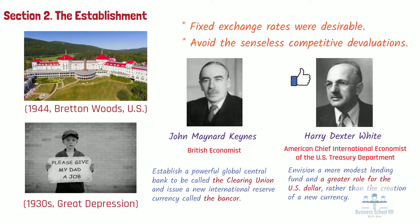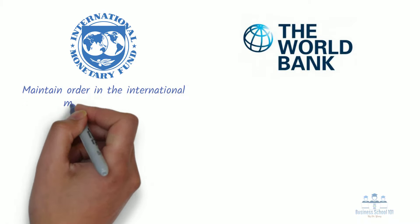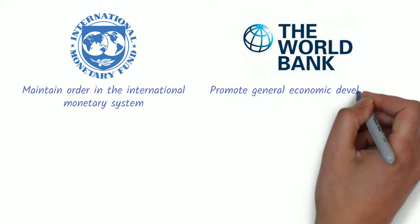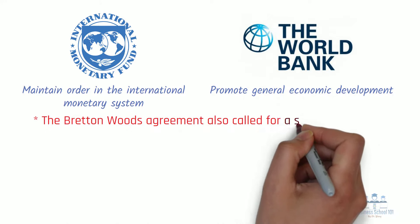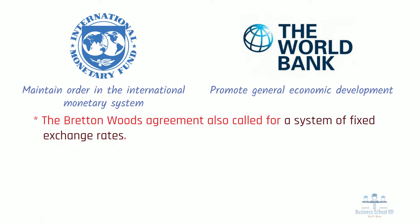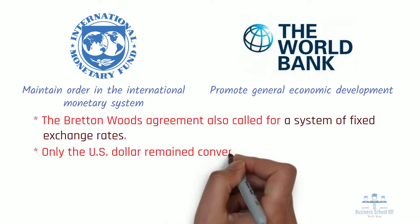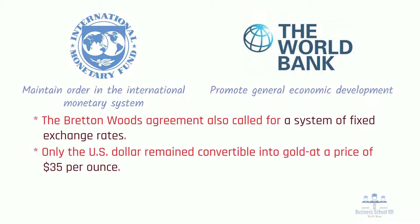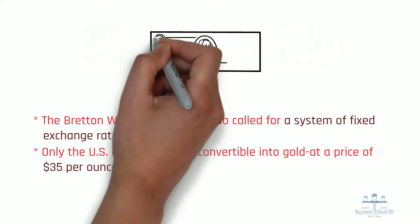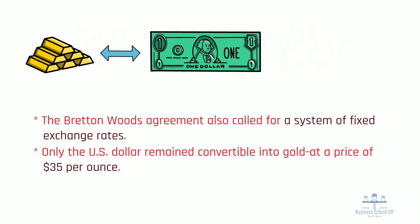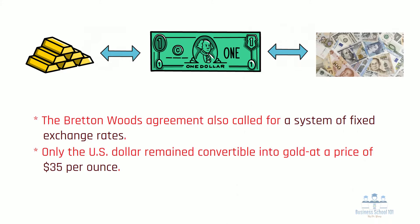The agreement reached at Bretton Woods established two multinational institutions: the International Monetary Fund, or IMF, and the World Bank. The task of the IMF would be to maintain order in the international monetary system, and that of the World Bank would be to promote general economic development. The Bretton Woods Agreement also called for a system of fixed exchange rates policed by the IMF. Under the agreement, all countries were to fix the value of their currency in terms of gold, but were not required to exchange their currencies for gold. Only the dollar remained convertible into gold at a price of $35 per ounce. Each country decided what it wanted its exchange rate to be vis-à-vis the dollar, and then calculated the gold par value of the currency based on that selected dollar exchange rate. Another aspect of the agreement was a commitment not to use devaluation as a weapon of competitive trade policy.